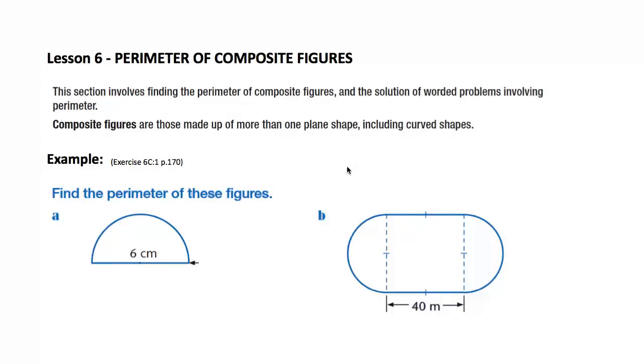This section has a look at the perimeter of shapes that we call composite. Composite in that there are a number of different common shapes joined together. We're going to look at ones, particularly ones that involve parts of a circle. First, looking at the notes, it's a good idea to define what we mean by composite figures. Composite figures are those made up of more than one plain or flat shape, and they include curved shapes such as parts of a circle.